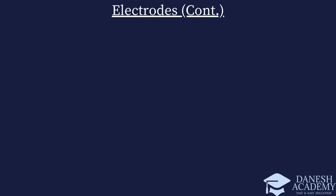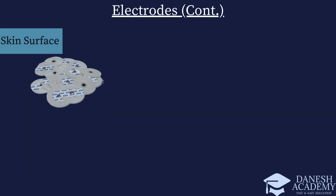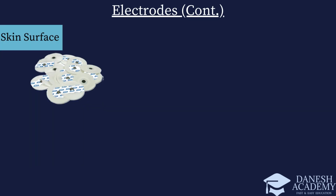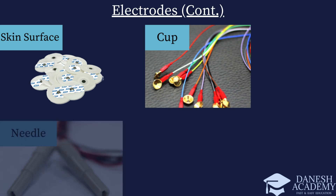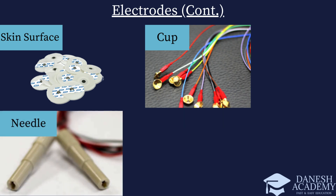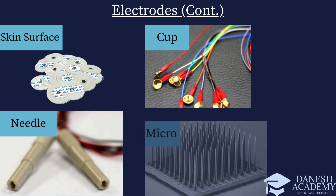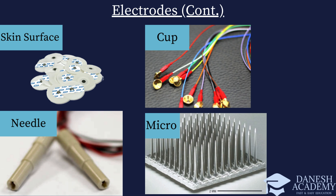Some famous electrode types are: skin surface electrodes, cup electrodes, needle electrodes, and microelectrodes. Each of these electrodes has its own specific applications, advantages, and disadvantages.